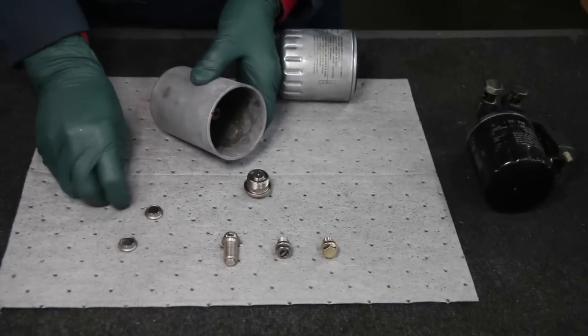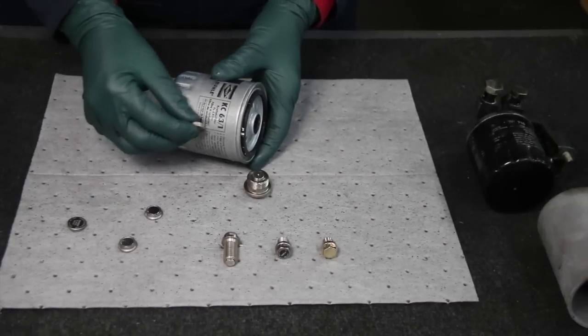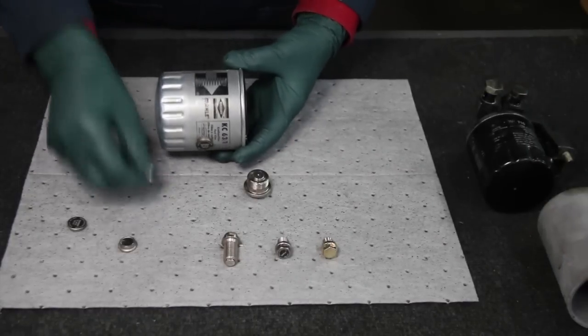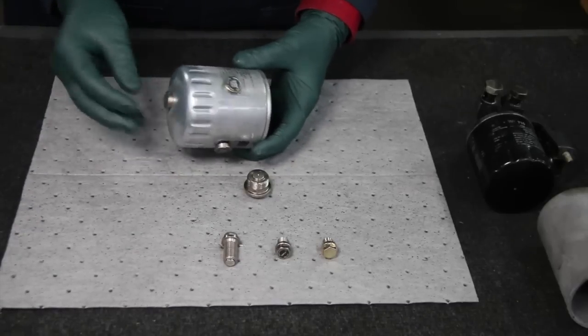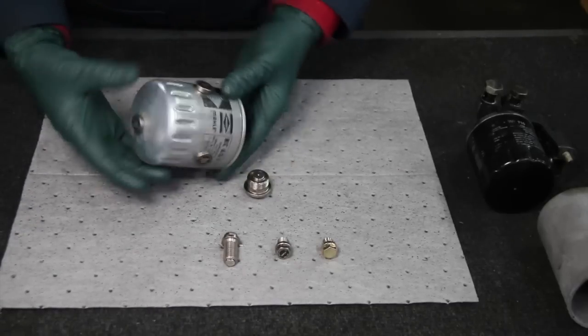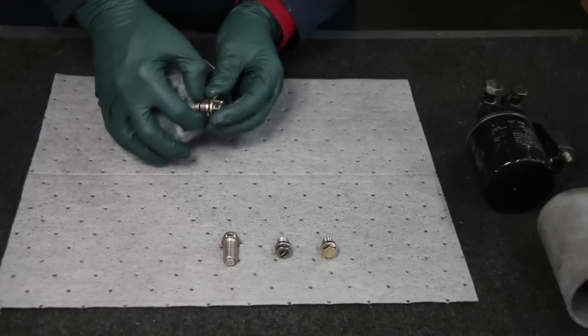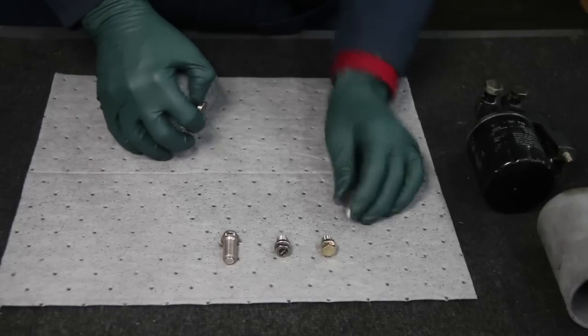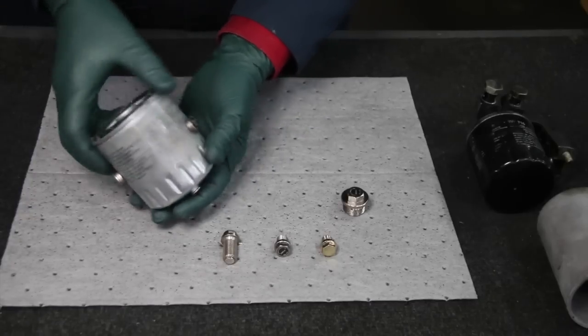But any other type of filter with a steel housing, you can put the magnets around the filter like this. You could even put one on the bottom, and there you have—you gotta be careful working around these things—a super strong magnetic pickup field inside the filter.